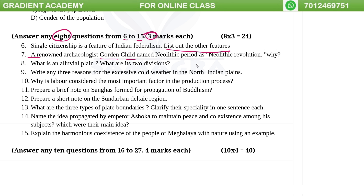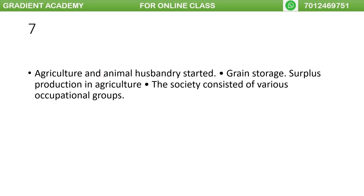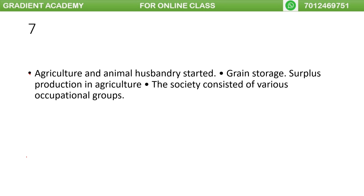A renowned archaeologist Gordon Childe named the Neolithic Period as the Neolithic Revolution. The Neolithic Revolution refers to the transition in society involving agriculture, animal domestication, and grain production.